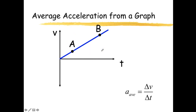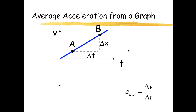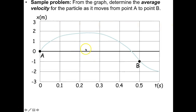For this next graph we're looking at average acceleration. Just as average velocity for a position versus time graph was the slope, now with a velocity versus time graph, the slope gives us average acceleration. The change in velocity over the change in time — so it should be change in velocity on the axis, not change in position.